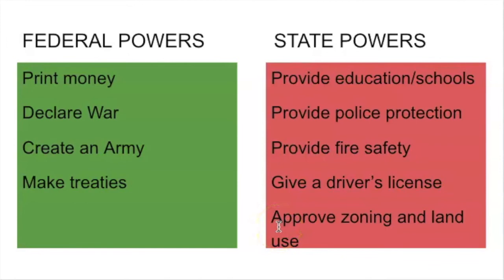The state also approves zoning and land use. So if you're going to build a house or a business, you have to go to the state for approval. These are all important because power is distributed across many things. We have the three branches of government that hold power, and then state and local governments that also have special powers. That way, no one branch or institution has too much power, and the power stays with the people. Have a good day.